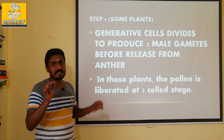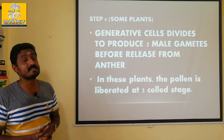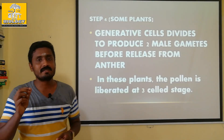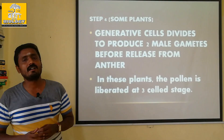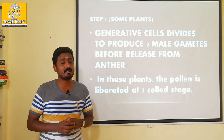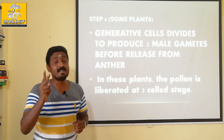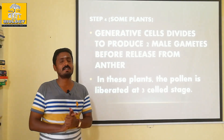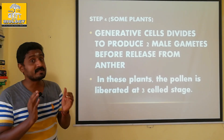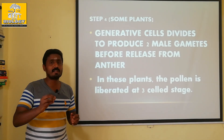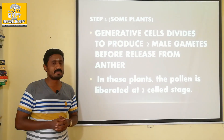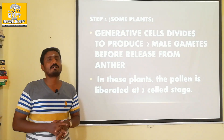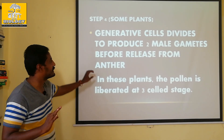In the generative cell, in the haploid condition, the generative cell will produce 2 male gametes. In 40% of the plant, the anther produces 2 male gametes.